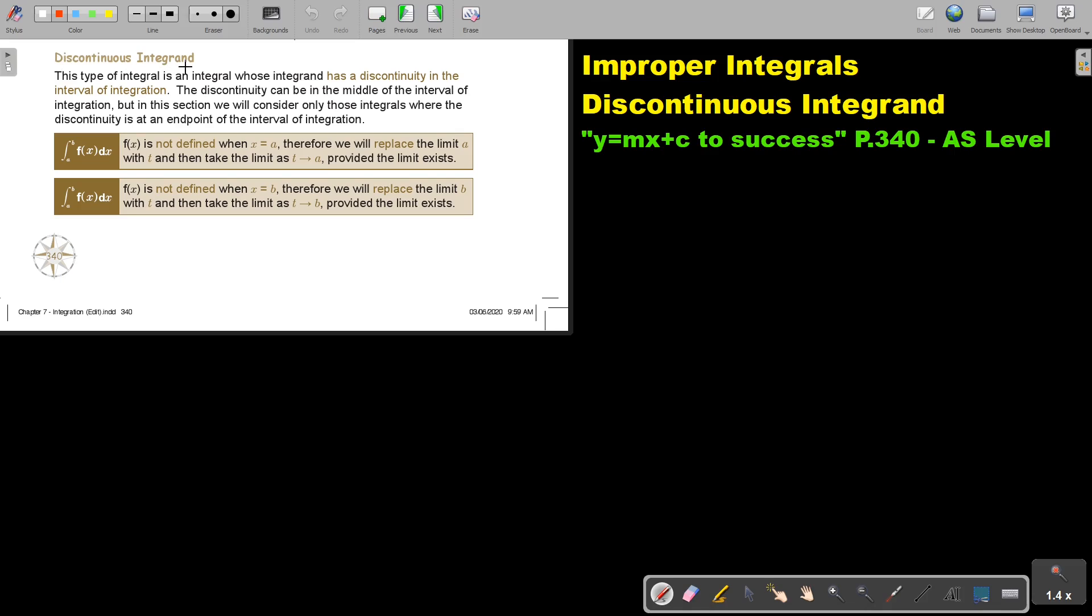The discontinuous integrand. This type of integral is an integral whose integrand has a discontinuity in the interval of integration. This discontinuity can be in the middle of the interval of integration, but in this section, we will consider only those integrals where the discontinuity is at an endpoint of the interval of integration, so either on top or at the bottom. So if f(x) is not defined when x equals A, that value at the bottom, therefore we will replace the limit A with T and then take the limit T striving to A, providing the limits exist.